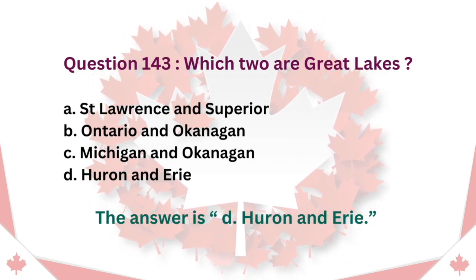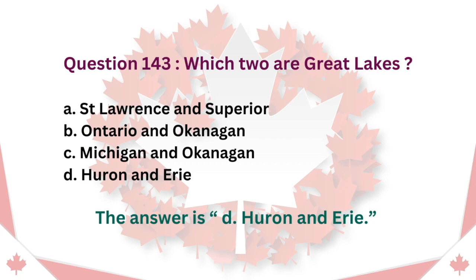Question 143: Which two are Great Lakes? A. St. Lawrence and Superior. B. Ontario and Okanagan. C. Michigan and Okanagan. D. Huron and Erie. The answer is D. Huron and Erie.